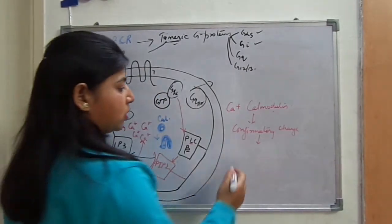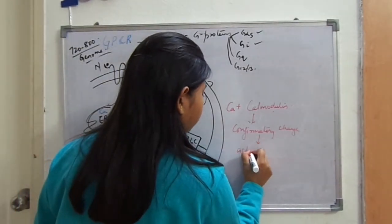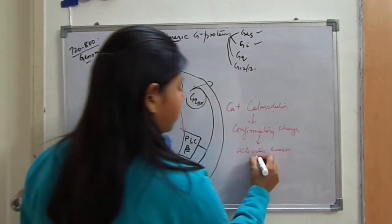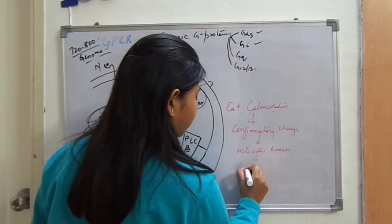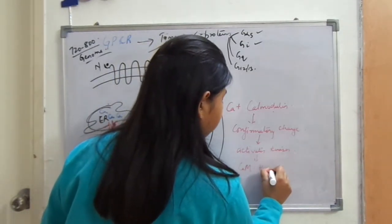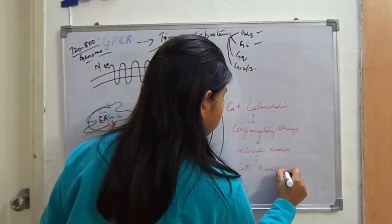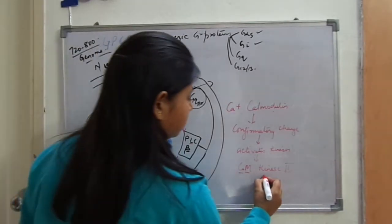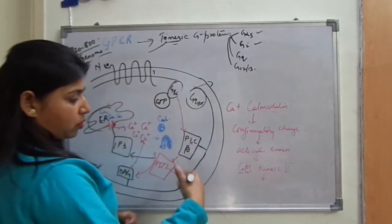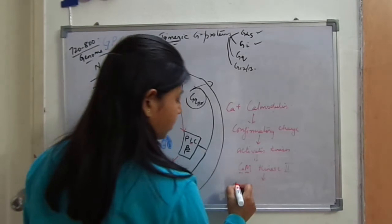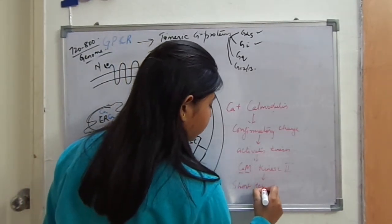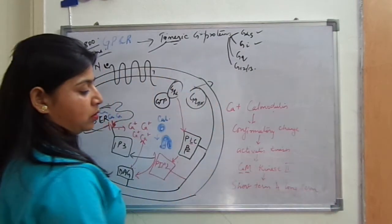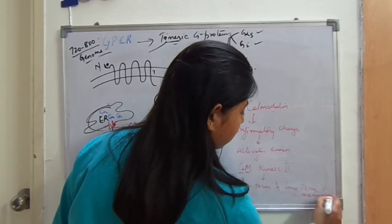This conformational change activates many kinds of kinases inside the cell. One important kinase is CaM kinase 2 — calcium calmodulin kinase 2. This is responsible for enhancing the transcription cascade for short-term and long-term memory in our brain.